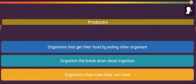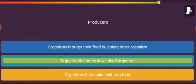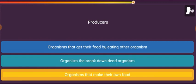Question: Producers. Option 1: Organisms that get their food by eating other organisms. Option 2: Organisms that break down dead organisms. Option 3: Organisms that make their own food.